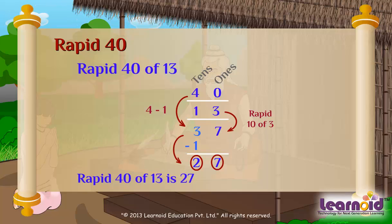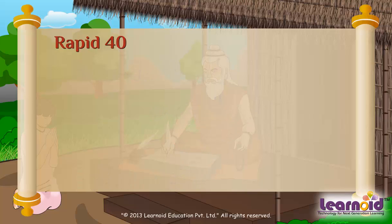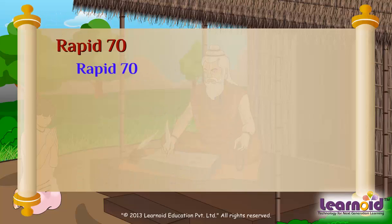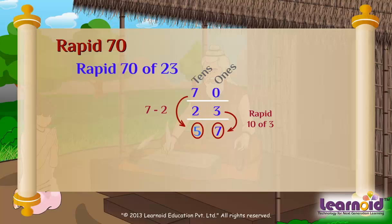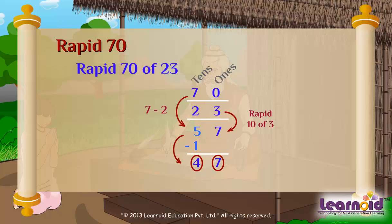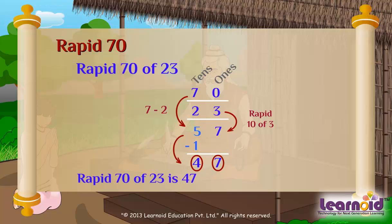This way we can find rapid of any number. Let's find rapid 70 of 23. Rapid 10 of 23 is 47, so rapid 70 of 23 is 47.